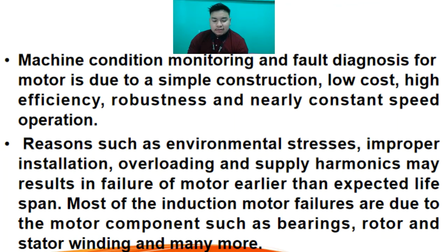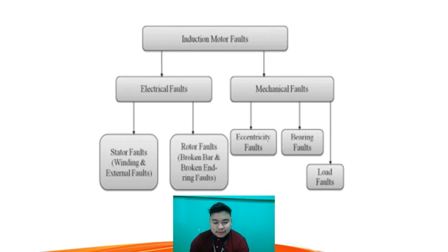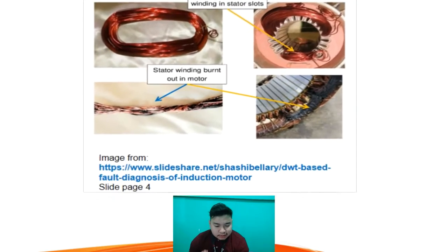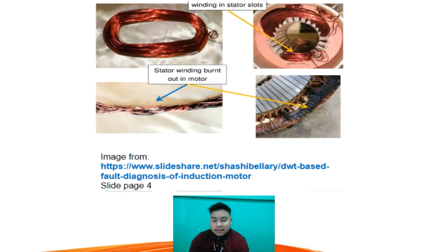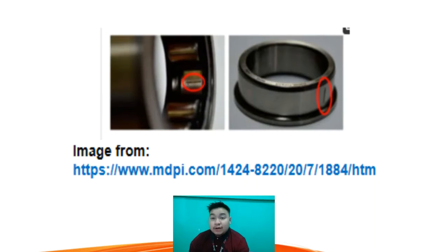The various faults in induction motors are broadly categorized as either electrical or mechanical failures, including stator winding defects, broken rotor bars, air gap eccentricity, misalignment, and bearing or gearbox failure, which is the most common type of failure as stated in figure 2.1. Motor faults have two categories: electrical faults, which include stator and rotor faults, and mechanical faults, which include eccentricity faults, bearing faults, and load faults.